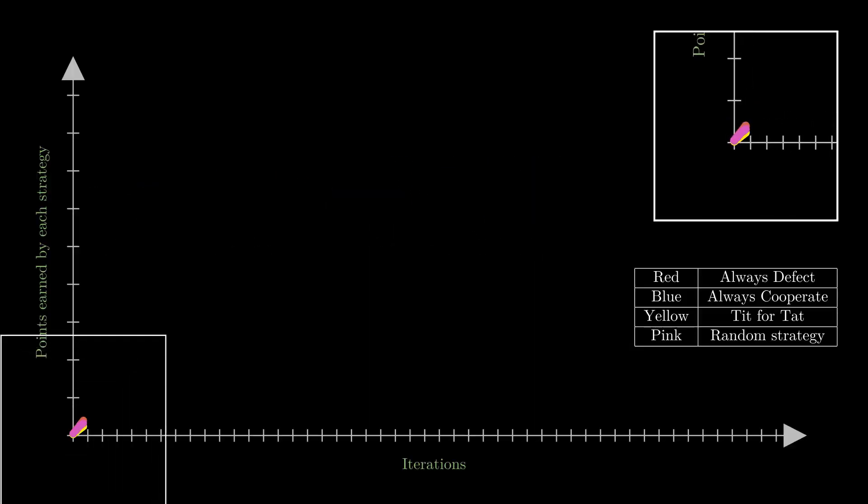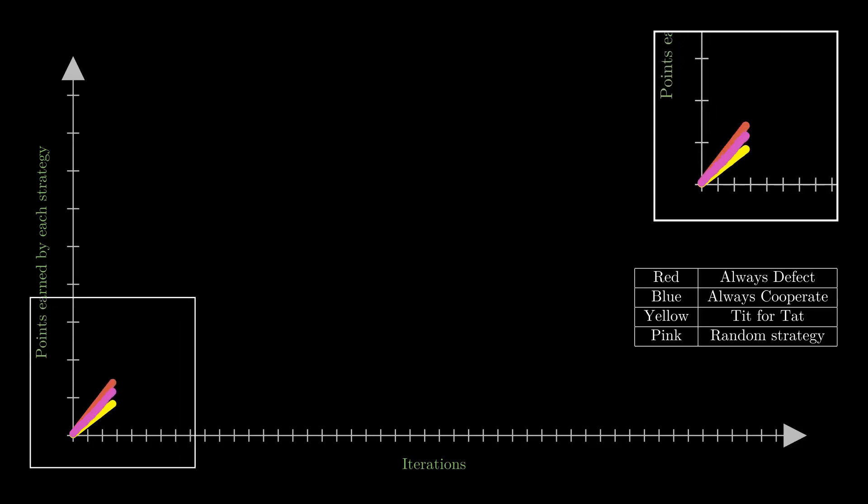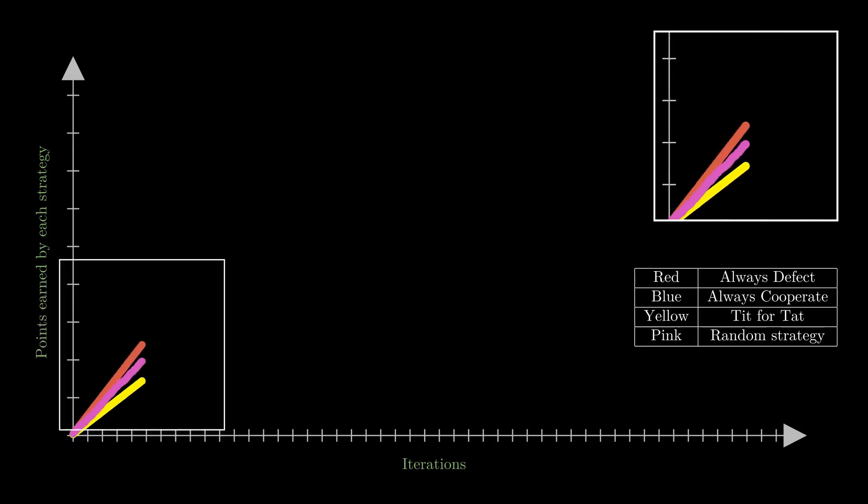If you pit all other strategies individually against always cooperate strategy, tit for tat strategy will be indistinguishable from always cooperate strategy so the blue curve and yellow curve overlap each other. Of course always defect strategy takes this over once again because it gains a lot of points by just defecting.